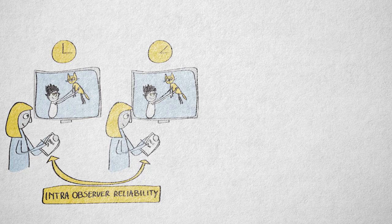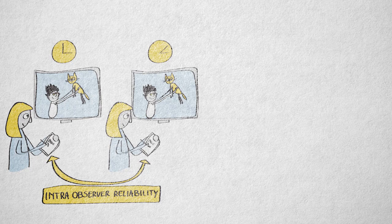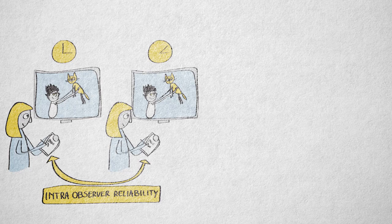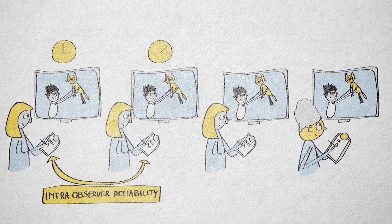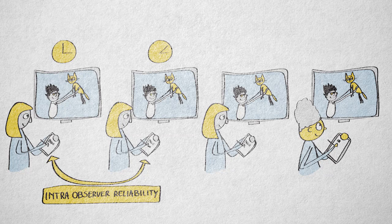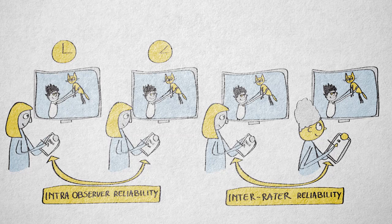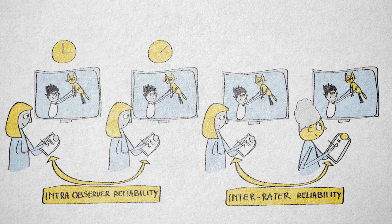Of course, the memory of the observer can inflate the association. Since it shouldn't matter who makes the observations, you could also assess the reliability of observation by having two different people observe and rate the behavior, and look at the association between the two rater scores. We call this inter-observer consistency, or inter-rater reliability.